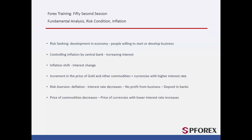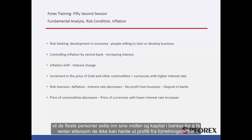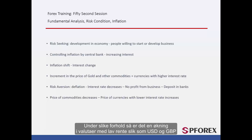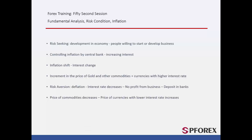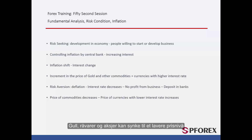In a risk aversion downturn condition, most people deposit their funds or capital into banks to receive interest, since they cannot derive any profit from their business. Due to a higher volume of liquidity in the financial market, banks reduce their interest rate to make people invest in their own business. In this condition, there is an increment in currencies with lower interest, such as US dollars and British pounds. For example, Australian dollars against US dollars would trend towards the bottom as interest in New Zealand decreases. Gold, commodities and stocks may decline to a lower price.